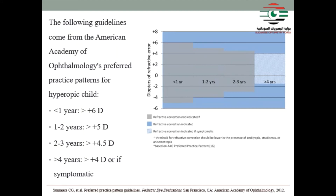The following are guidelines from the American Academy of Ophthalmology preferred practice guidelines for pediatric eye evaluation. For patients less than one year: six diopters and less — no treatment needed. One to two years: less than five diopters — no need. Two to three years: less than four and a half diopters — no need. Four years or older: less than four diopters — no need. Each case is also considered individually.